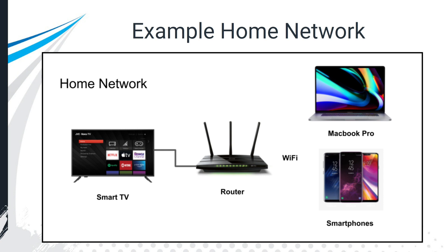Here's a very simple home network: a router connected to a smart TV — once it's connected to the router, the TV can use Netflix and access the internet, hardwired via Ethernet. The Wi-Fi is connecting to a MacBook Pro and a smartphone, so all of those devices are connected and even the smartphone is part of this system.